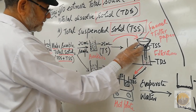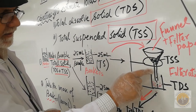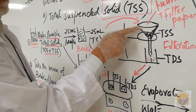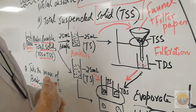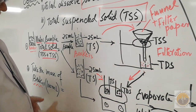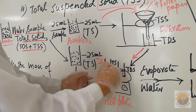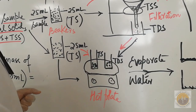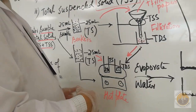For TDS, we filter the 25 ml sample first. After filtration, the filtrate collected is the TDS, and the residue left on the filter paper is TSS. We then collect the TDS filtrate and the TS sample separately, place both on a water bath, and after the water evaporates we obtain the TS solid and the TDS solid.